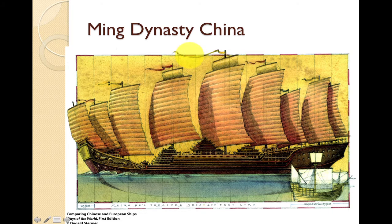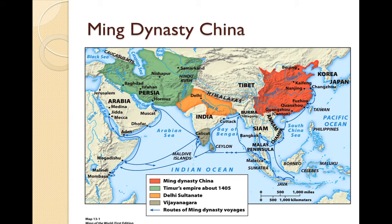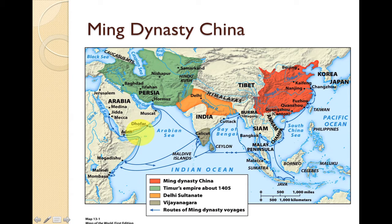To scale, one of Zheng He's ships dwarfs one of Columbus's ships. Six voyages took the Chinese across Southeast Asia to the east coast of Africa and the Middle East — leaving from China, throughout Southeast Asia, through the Strait of Malacca, into the Indian Ocean, all the way to East Africa, and up the Red Sea to the Arabian Peninsula. However, internal political differences led to all voyages being recalled in 1453, and China turned inward. We'll never know what could have happened if the voyages had continued.